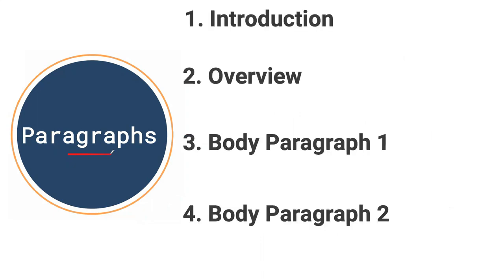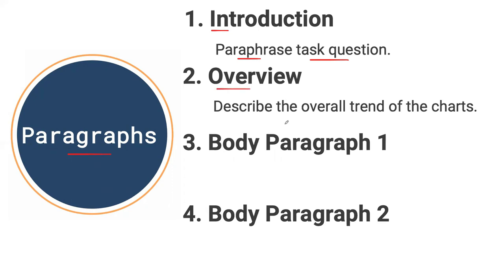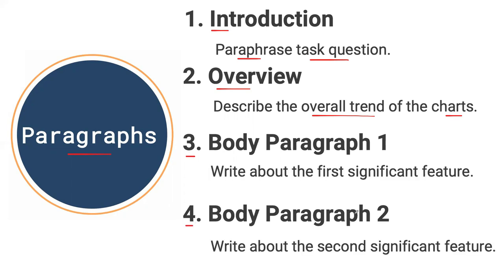Think of your outline like this: we're going to have an introduction where we paraphrase the task question using different words and synonyms. Then we'll have an overview paragraph describing the overall trend of the charts. Our last two paragraphs are going to write about the first significant feature and then the second significant feature — which in this case will be the year 2000 in the first paragraph and the year 2050 in the second.